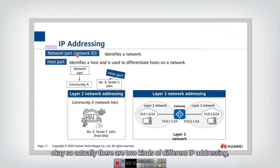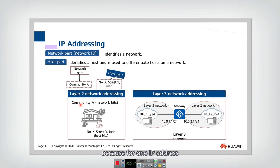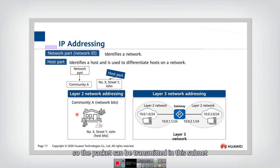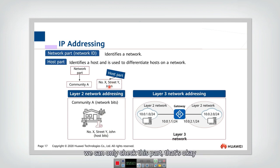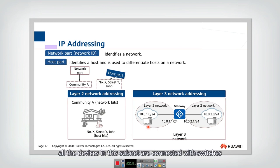There are two kinds of IP addressing. In layer two, for one IP address the first part is the network part and the second part is the host part. A packet can be transmitted within a subnet by using the host part to find the destination host. In a layer two network, devices only need to check the host part. A layer two network where all devices are connected with switches and there are no routers is called a subnet.